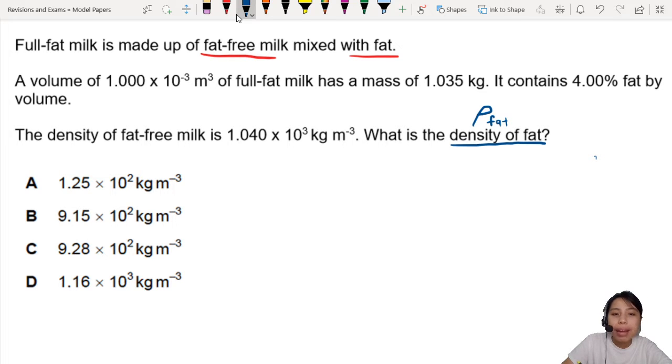We have fat-free, right? One part of milk is fat-free, but then it's also fat. And there's also the total combined thing. So full fat, which is basically the total, aka total.